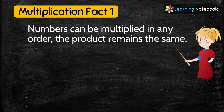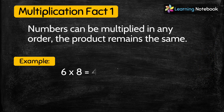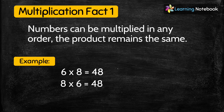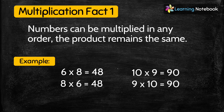Let's start and see the first multiplication fact: numbers can be multiplied in any order and their product remains the same. For example, 6 multiplied by 8 equals 48, and if we reverse the order, 8 multiplied by 6 also equals 48. Another example: 10 multiplied by 9 equals 90, and 9 multiplied by 10 also equals 90. So multiplication fact 1 is that numbers can be multiplied in any order and their product remains the same.